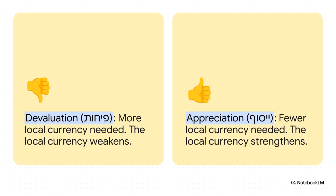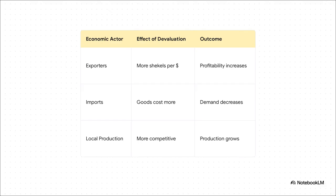Now let's see how this choice plays out in the real world. When a currency gets weaker, it kicks off a whole chain reaction. If you're an exporter selling things in dollars, every dollar you earn is suddenly worth more shekels — ka-ching, your profits go up. But at the same time, all the stuff we import from other countries gets more expensive.